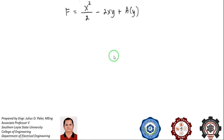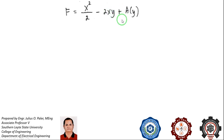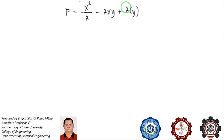The integral of x dx is x squared over 2, and the integral of minus 2y dx is minus 2xy, because 2y is a constant. After integrating, we need to add a constant of integration that is a function of y. We do this because when we integrated the M term, we assumed y as a constant, so the constant of integration must be a function of y.